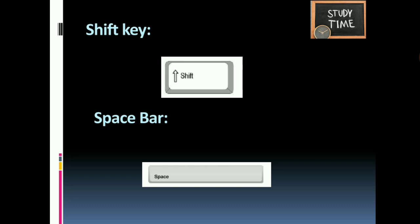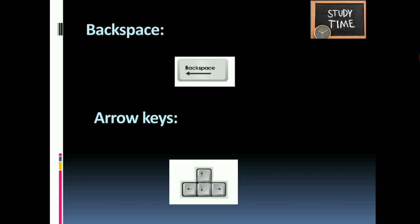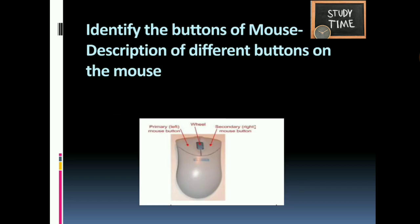There are typically two Shift keys — on the left and right sides of the row below the home row. Space Bar: this key is used to insert a space between two words. It is the longest key on the keyboard. Backspace: it is used to delete any character before the current position of the cursor. Arrow keys — left, right, up, and down — are used to move the cursor in all directions.